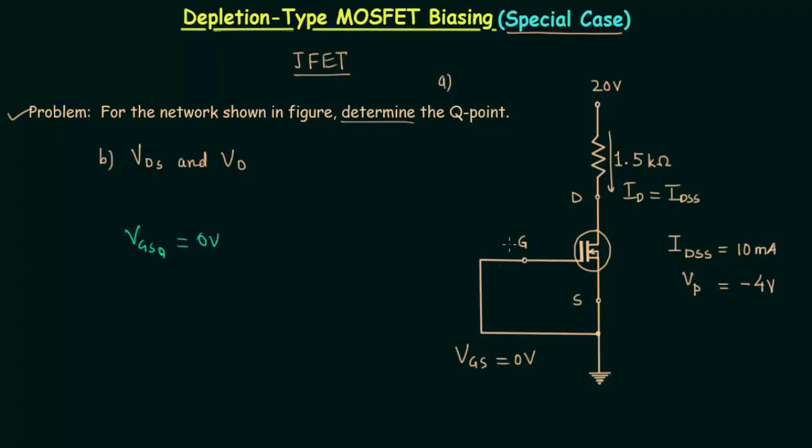IDSS is equal to 10 milliamps, so IDQ is equal to 10 milliamps. In this way, we have the operating point. We are done with part A of the problem.